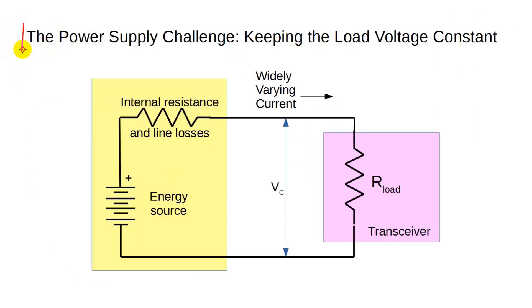Let's look at the power supply challenge. Here, the radio is represented as a load resistor in the pink box. Radios want a relatively constant input voltage, but the current going into a radio is highly variable. For example, a VHF mobile rig might want only one amp on receive, but suddenly wants 10 amps on transmit.